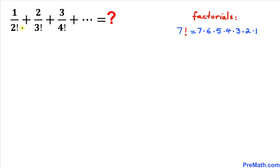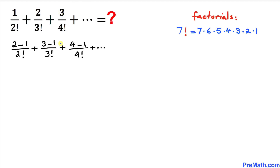Let's manipulate this infinite series by focusing on the numerators. I can write 1 as 2 minus 1. Likewise, 2 could be written as 3 minus 1, and 3 could be written as 4 minus 1, and so on. In the next step I have replaced these numerators accordingly: 1 as 2 minus 1, 2 as 3 minus 1, and 3 as 4 minus 1.